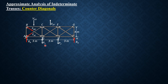If P1 minus RA is positive, that means the shear in panel DF is upward. In this case, the vertical component of member CF should be upward, so it is a compression member. The vertical component of DE must also be upward, so it is a tension member.